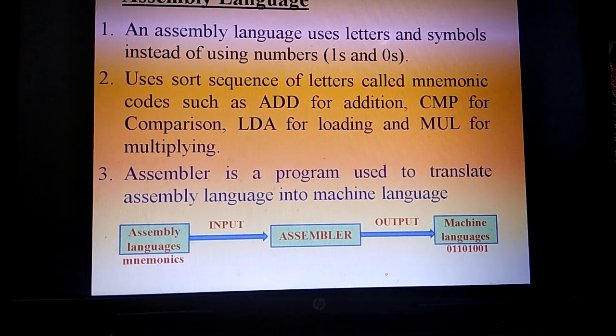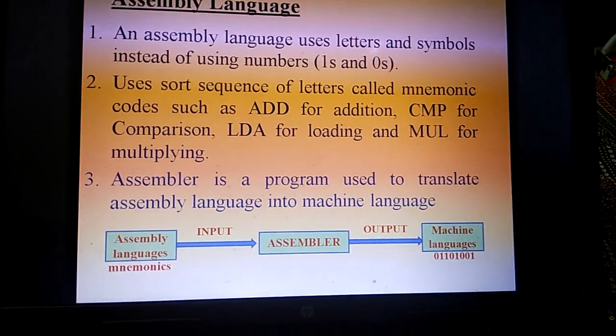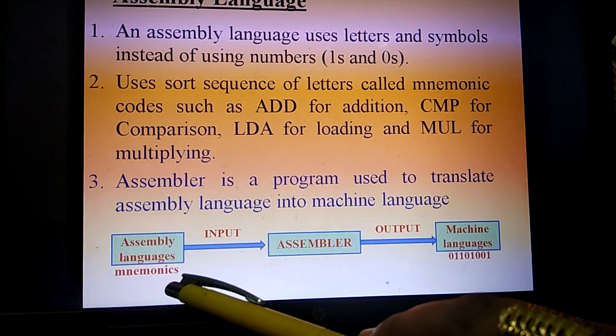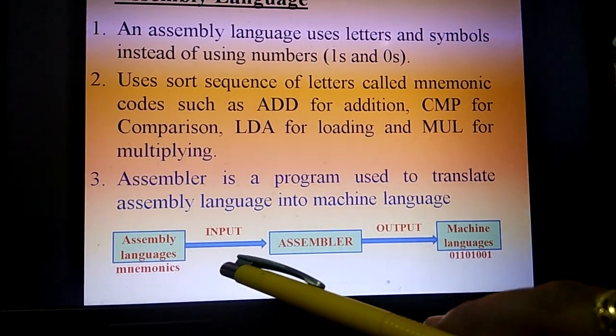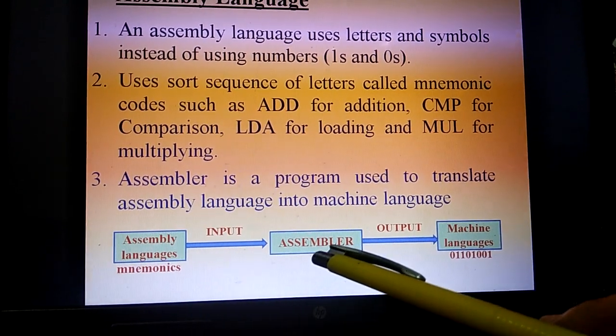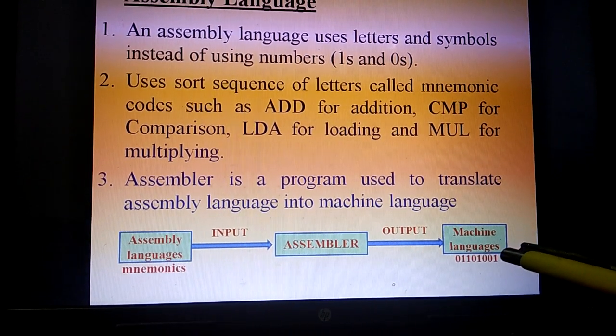Assembly language is a source program which must be translated into machine language before the computer can understand it. As you can see in this diagram, assembly language with the mnemonic code is given as input, and then the assembler converts it into output in machine language.